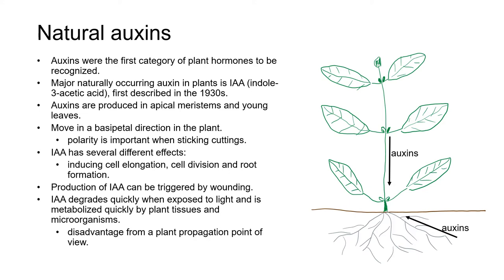Natural auxins are produced in apical meristems of both shoots and roots and in young leaf tissue, and they move in a basipetal direction in the plant, meaning they move towards the crown of the plant. In the aerial parts of the plant — the parts above ground — this means auxins are generally moving in a downward direction. In the roots, they're generally moving in a more or less upward direction.